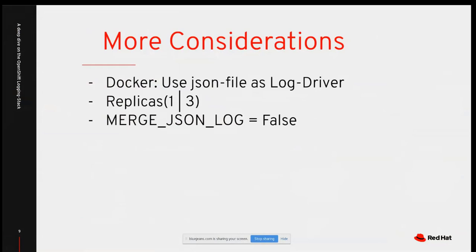Replicas in Elasticsearch refer to data copies, not pod count. With one replica you have two copies of the data; with more replicas you have greater redundancy. If a node has problems, you can use the replica data from another node, making your setup more secure and resilient.